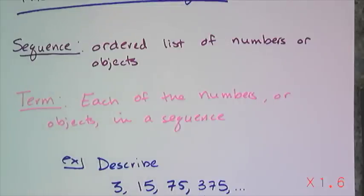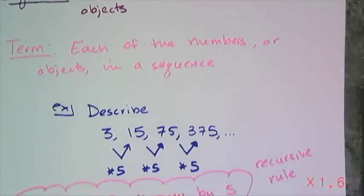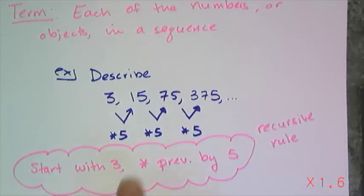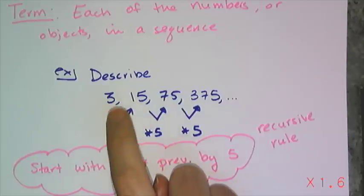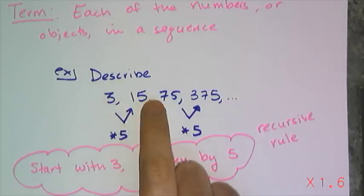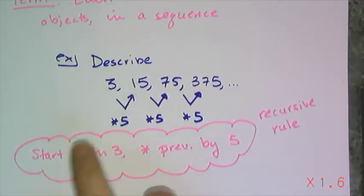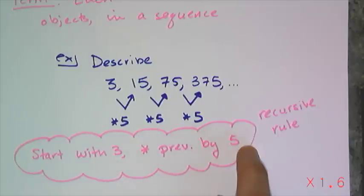So in this case, I start with the number 3 and I have to figure out what changes a 3 into a 15 and a 15 into a 75 and a 75 into 375. And if I just do a little bit of tinkering, I get multiplied by 5. So the procedure to turn one term into the next term is to multiply by 5, which gives me a recursive rule that start with 3, multiply previous by 5.